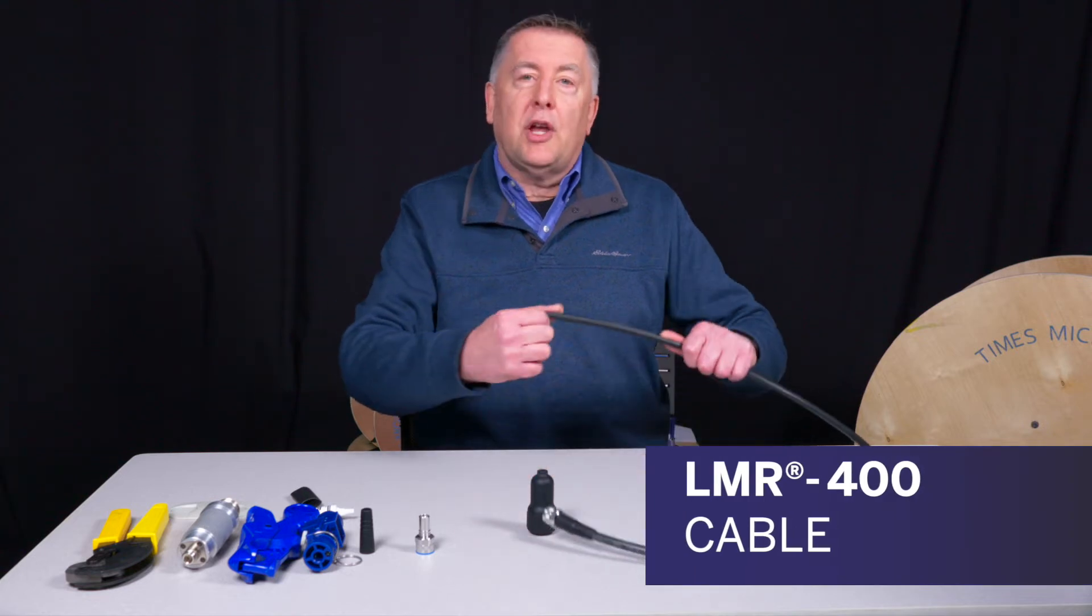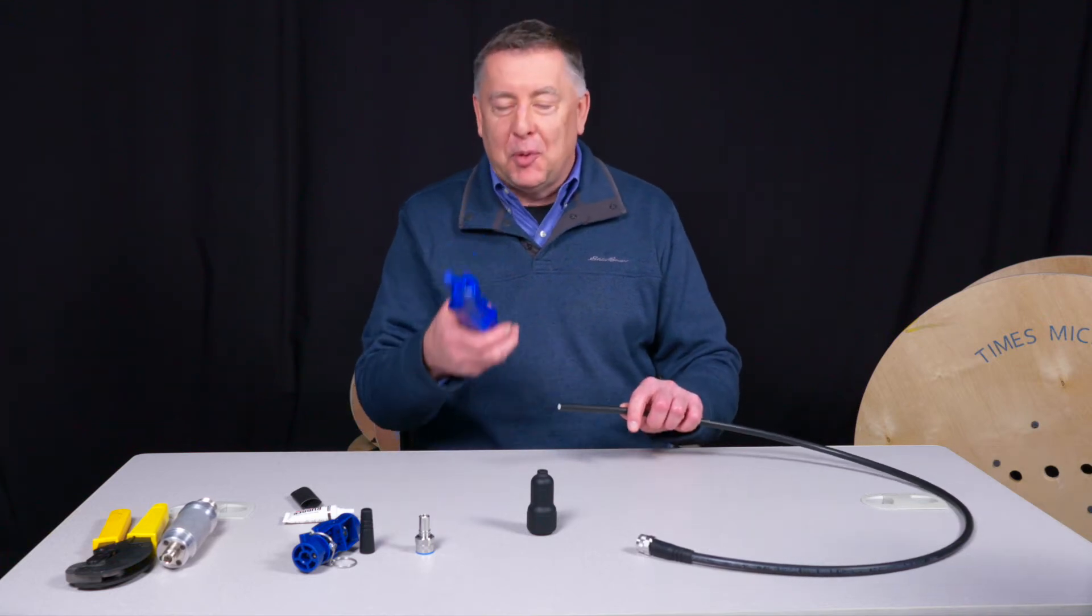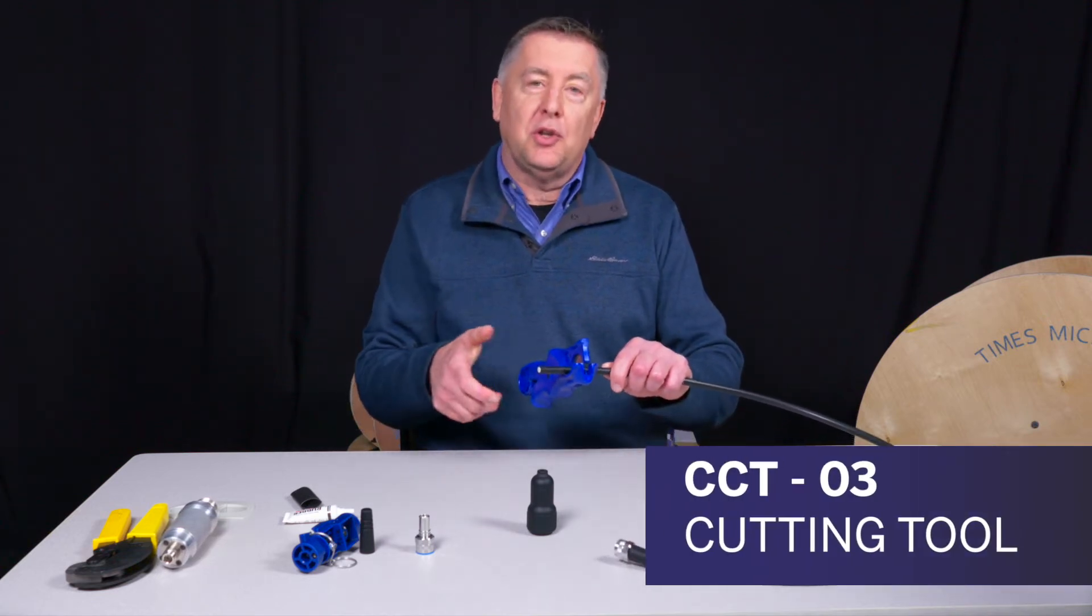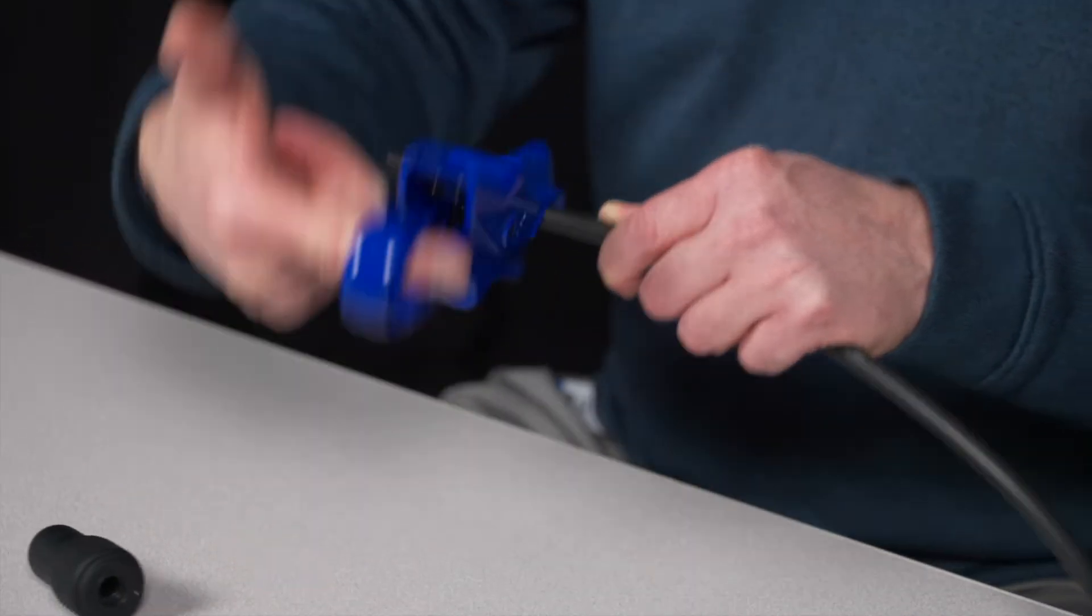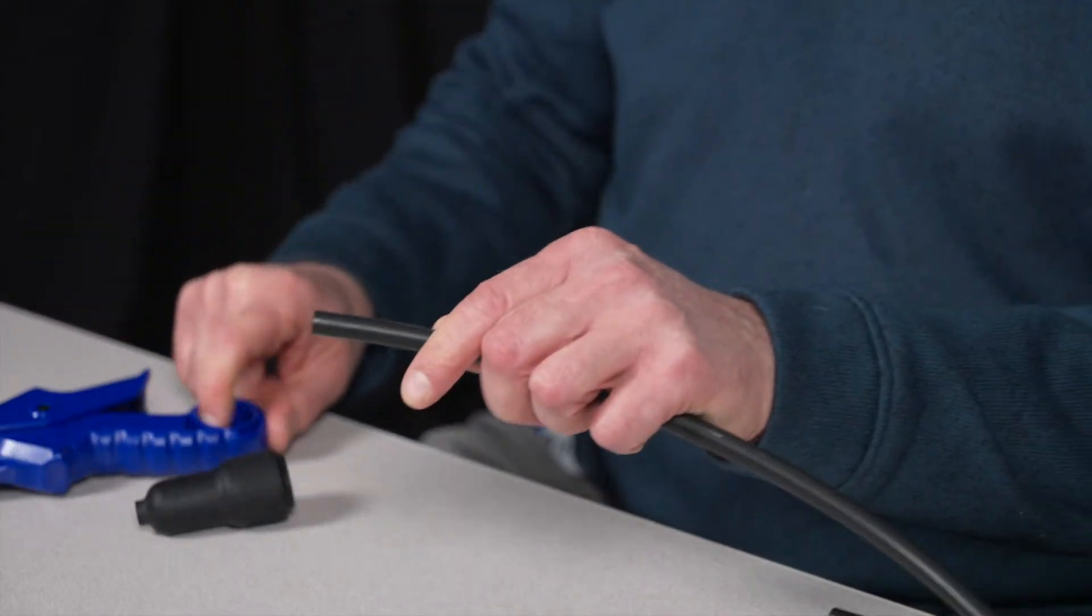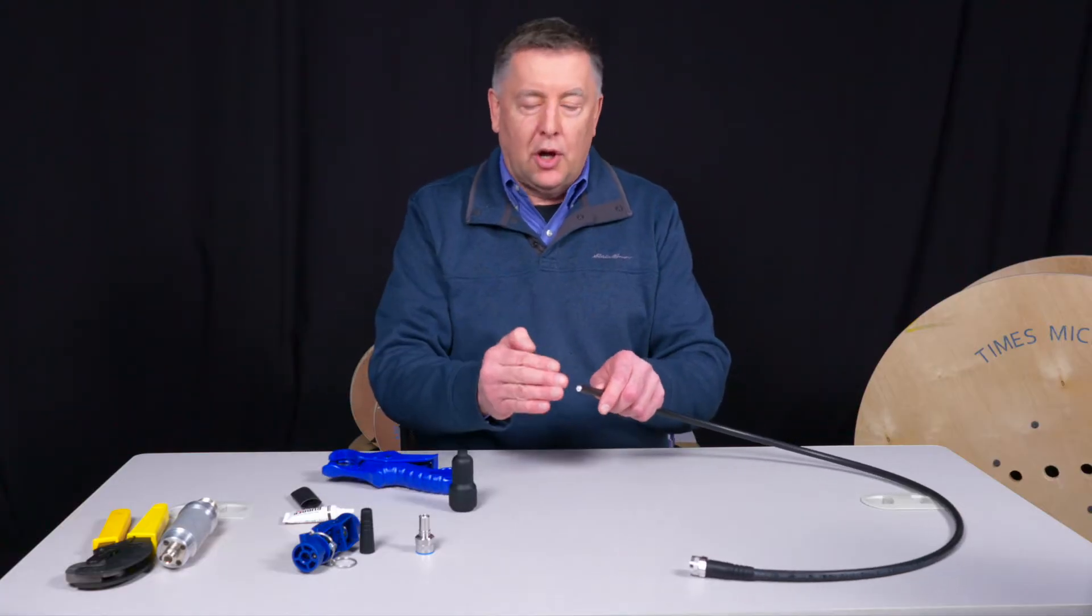So first, you have your LMR400, and we already have a nice clean cut in there. We're going to take the opportunity to demo our CCT-03 cutting tool. Just place it on the cable—it's spring loaded—place your finger through the hole, and just turn that around the cable a few times, and it's going to snap off. It's going to make a nice, clean, sharp cut.